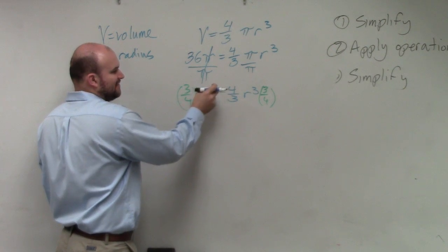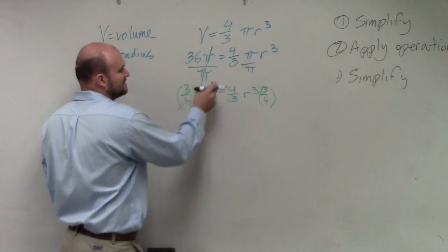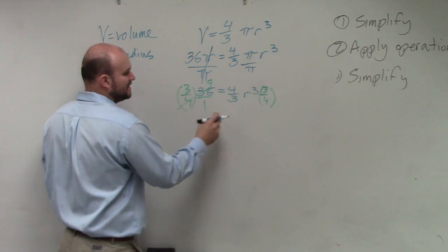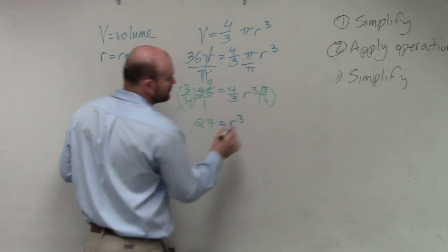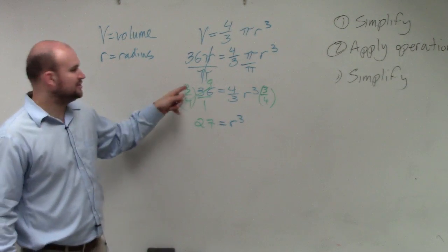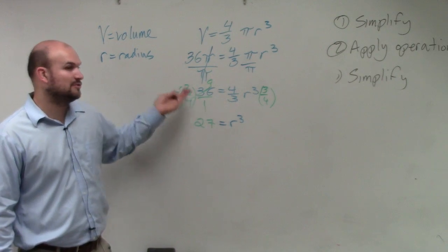36, I can simplify this. 4 divides into 36, 9 times. 9 times 3 is 27 equals r cubed. You guys also could do 3 times 36 and then divide it by 4. You get the same answer.